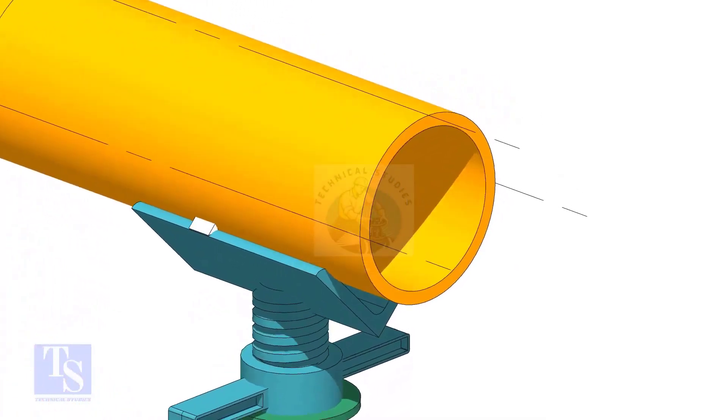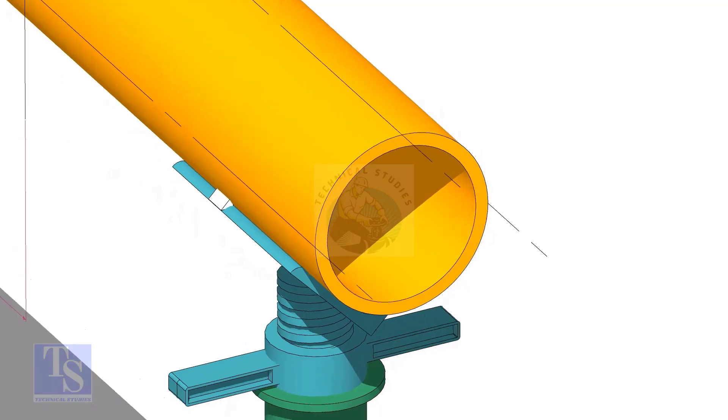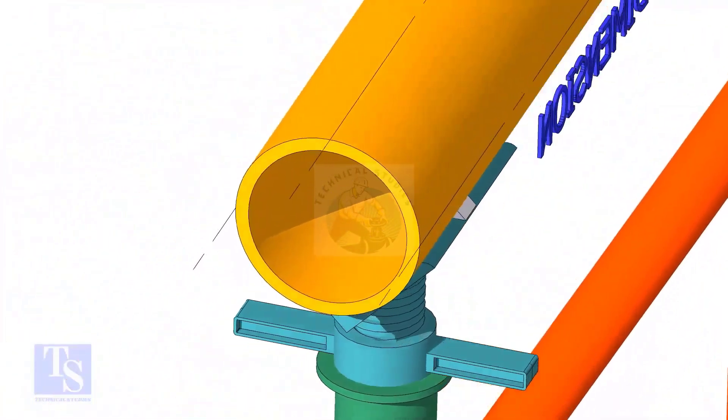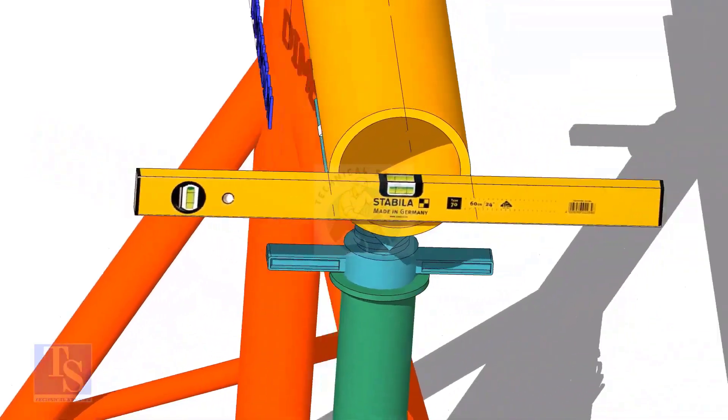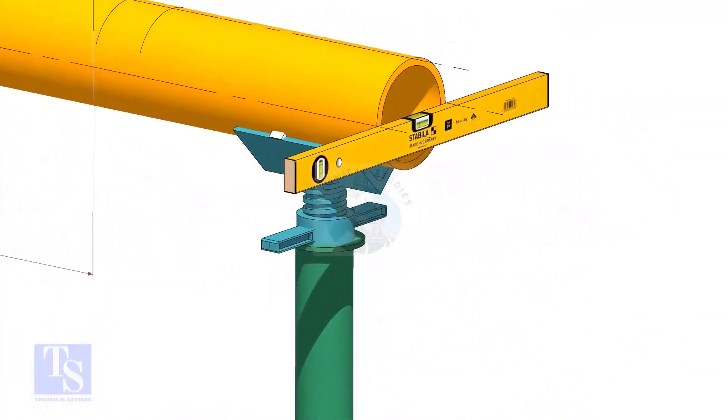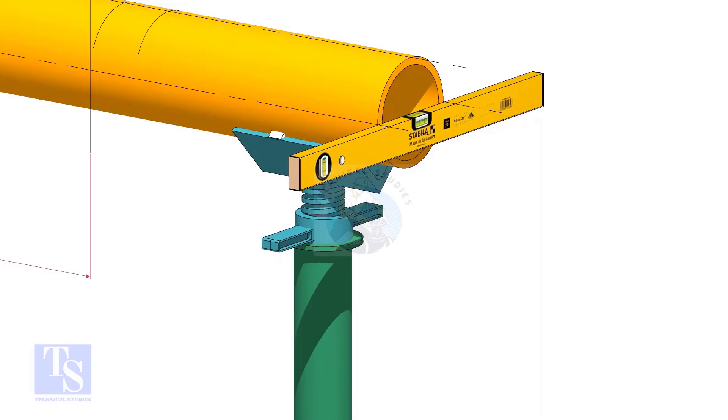After leveling the pipe, mark the center line and two quarter lines. Arrest the pipe, if required, make small tack welds.